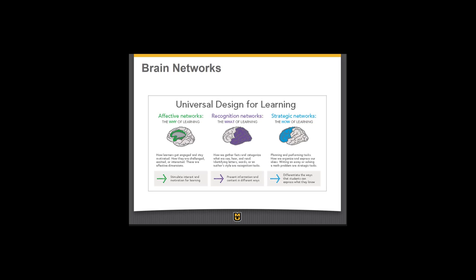UDL uses two different types of brain research as its basis. There is research on learner variability — learner differences — which was on the previous slide. Learner variability shows us that no two people learn in the same exact way. The second type of brain research that UDL is based on is research about the three different networks that we know exist in our brain. All three of these networks need to be engaged for high quality learning to happen. The UDL framework attempts to give teachers tools to make sure all three of these networks are engaged with all learners. The first network is the affective network — this is the why of learning. When we engage the affective network, we're thinking about how learners are engaged and stay motivated, how they're challenged or excited.